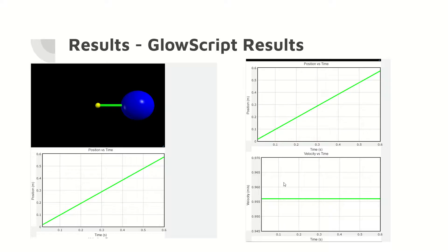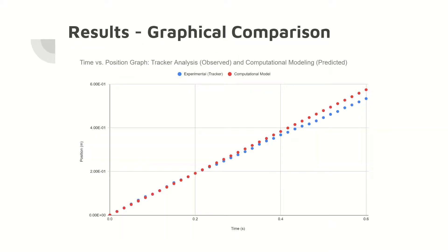Here are the results from GlowScript. Here is the graphical comparison of position versus time for the observed motion of the baseball and the predicted motion of the baseball. The x-axis is time in seconds and the y-axis is the position from the origin in meters.